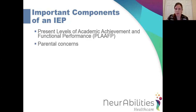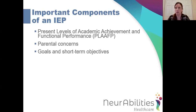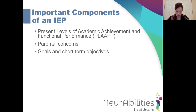The next important component is parental concerns. At the meeting, the team will ask what concerns you have, and those will all be documented in the IEP. The next important component is the goals and short-term objectives. These goals should be objective, observable, and measurable, and specific to your child's needs. The goal is the main thing your child will demonstrate within 10 to 12 months — the IEP is good for 12 months, and the goals should reflect what your child will achieve in that time. They're directly related back to the PLAAFP statement, and the short-term objectives are the smaller steps the child will accomplish on the way to achieving the overall goal.